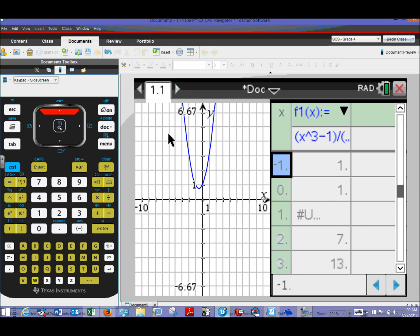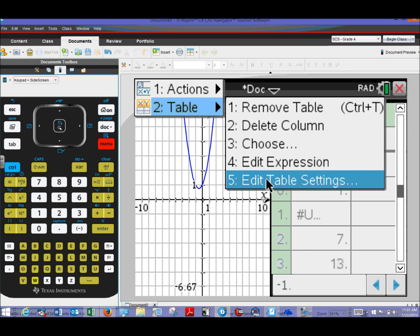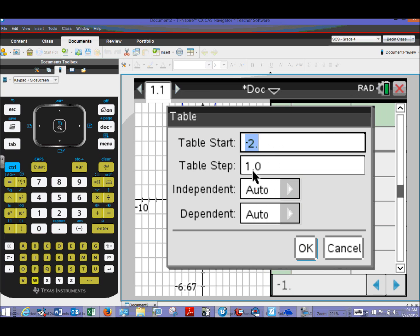And that's not very helpful in terms of us trying to put together a chart with these very decimalized x values. So no worries there. We're going to be able to change that. So if the table is highlighted, and it should be, you can then access the menu, which brings up different menu options that pertain only to the table. Use option two for table, and then option five, edit table settings.